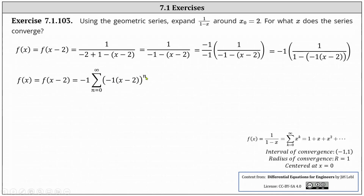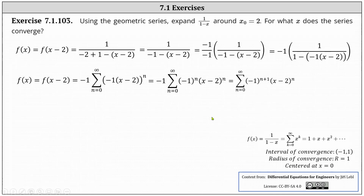Now let's break up the nth power of the product of negative one and the quantity x minus two into two products. We write this as negative one times the sum from n equals zero to infinity of the nth power of negative one times the nth power of x minus two. We can bring the negative one into the sum — negative one times the nth power of negative one gives us the n plus one power of negative one. And therefore the geometric power series around x sub zero equals two is the sum from n equals zero to infinity of the n plus one power of negative one times the nth power of x minus two.